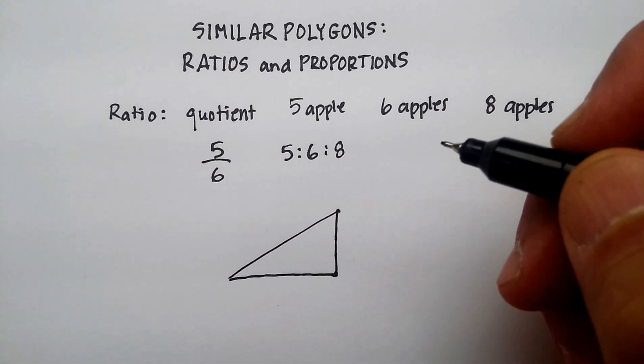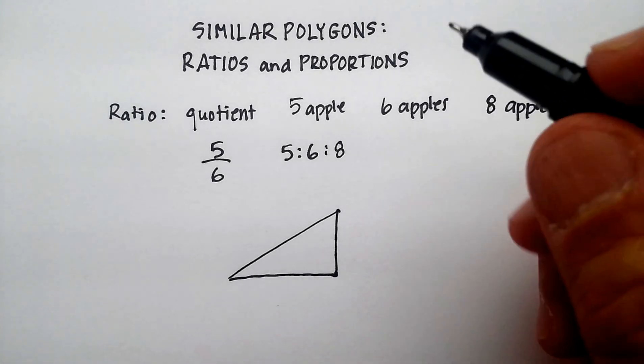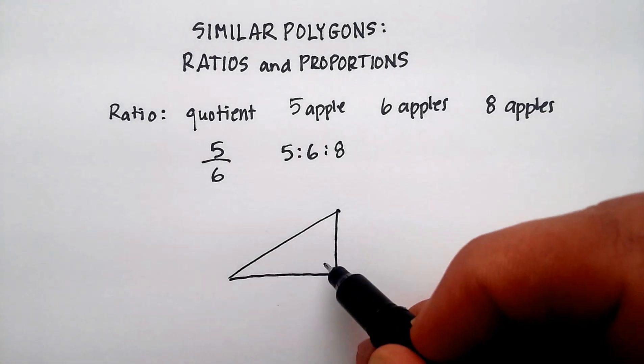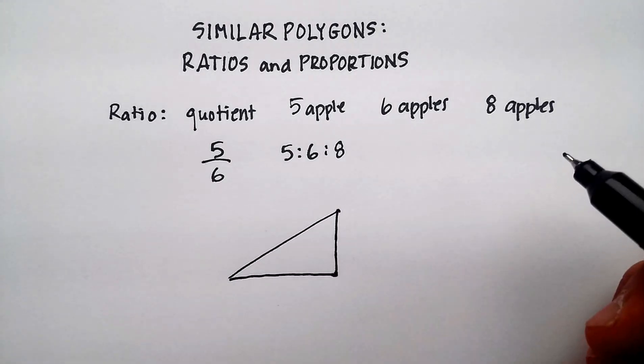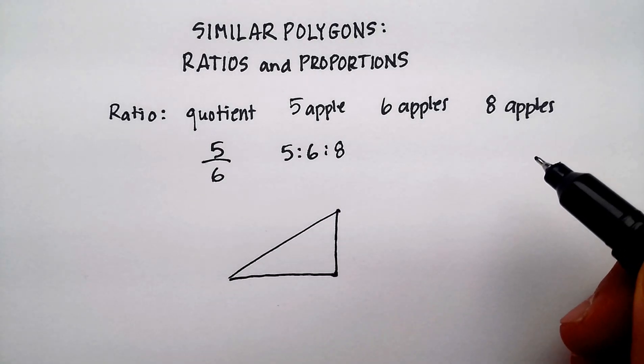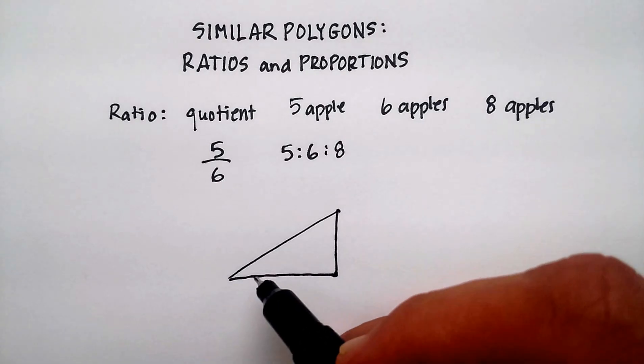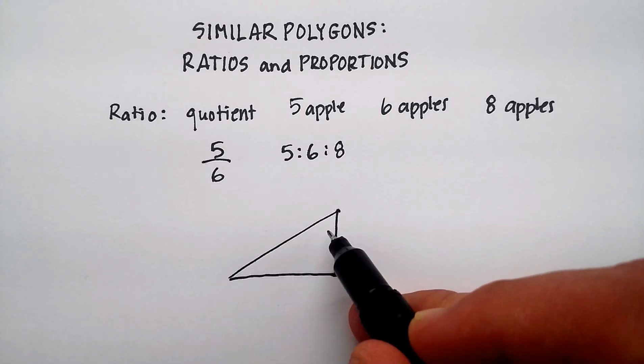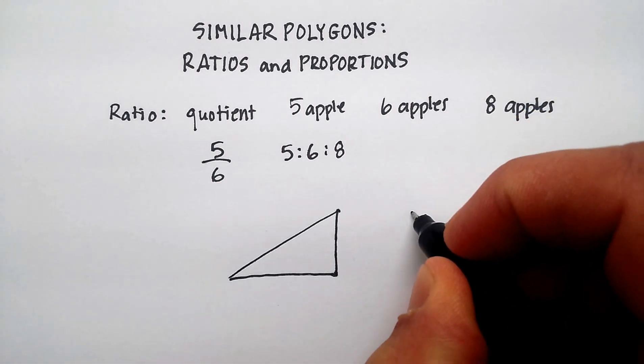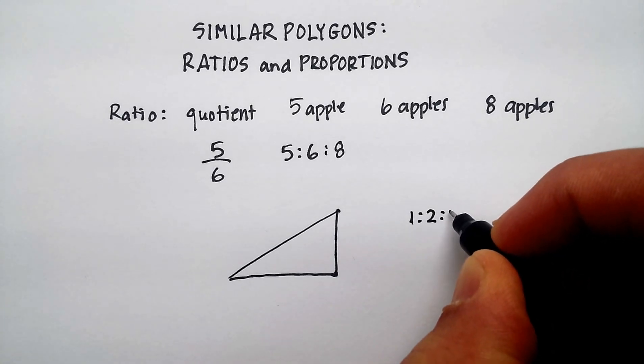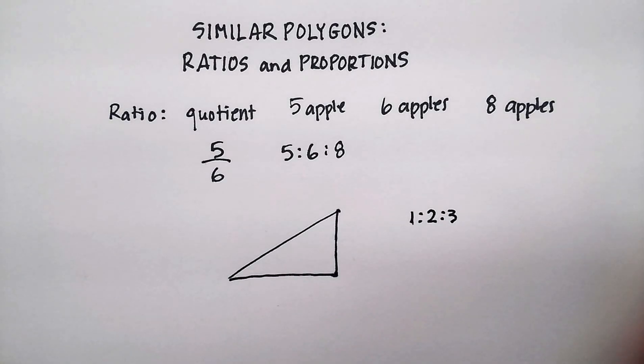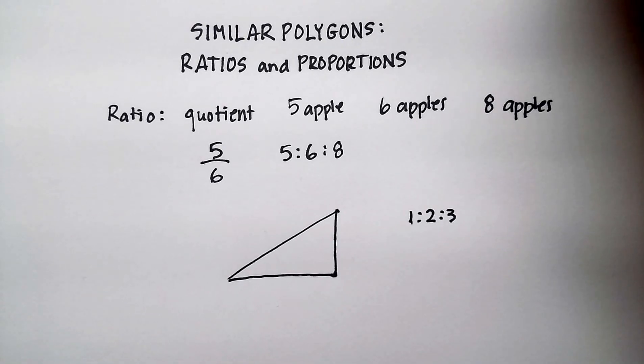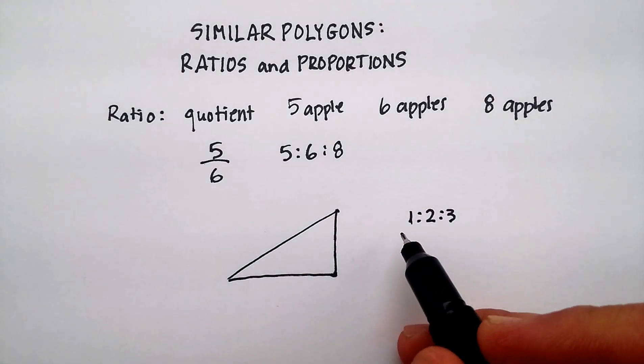And one thing I know about triangles is that the different angles, the interior angles, add up to 180 degrees. And let me also say that in this particular triangle, the interior angles have a ratio of one to two to three.